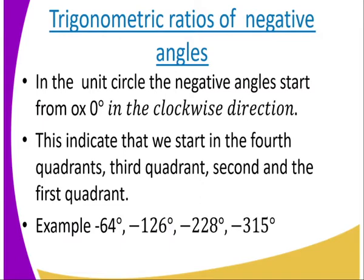Let us briefly summarize what we have talked about. In the unit circle, negative angles start from OX — zero degrees — in the clockwise direction. This means we start in the fourth quadrant, then the third quadrant, then the second quadrant. For example: negative 64 degrees, negative 126 degrees, negative 228 degrees, and negative 315 degrees — that is how they are represented.